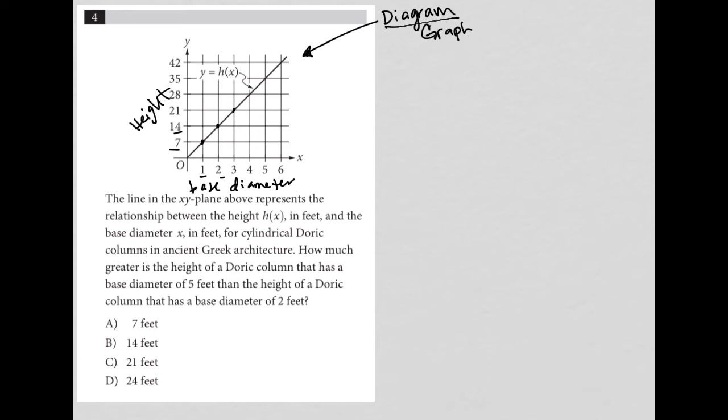Base diameter is the x-axis for cylindrical Doric columns in ancient Greek architecture. How much greater is the height of a Doric column that has a base diameter of 5? Let's figure out where that is. So our base diameter of 5 is here. The height that corresponds with that is up here. So that height is 35.